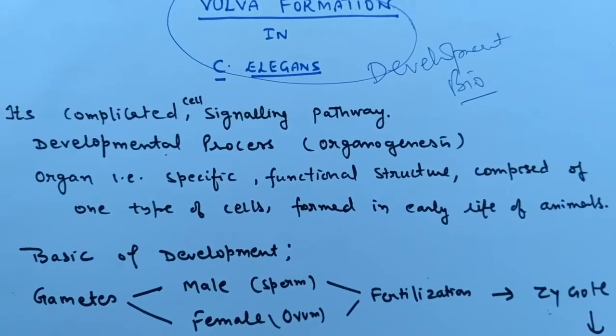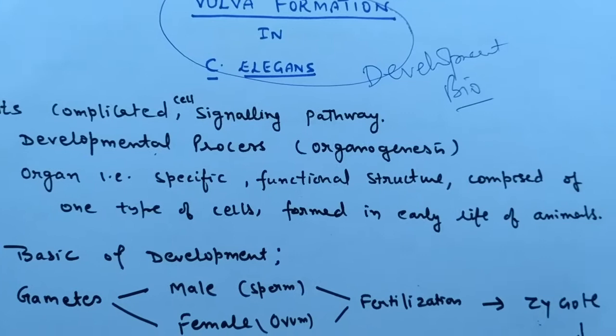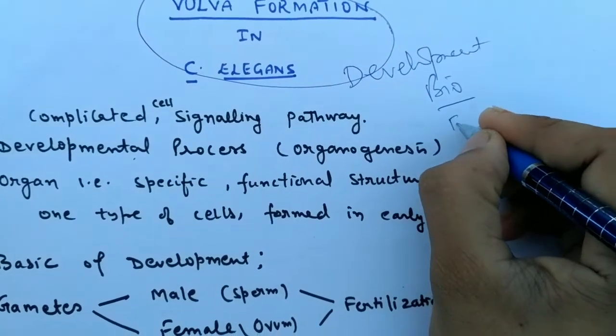First of all, I will discuss what is the vulva. Vulva is the external genitalia, the reproductive part that helps in egg laying.